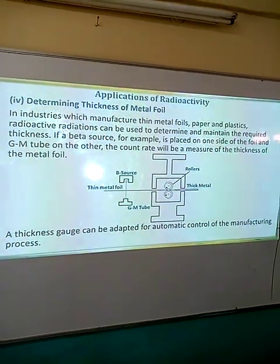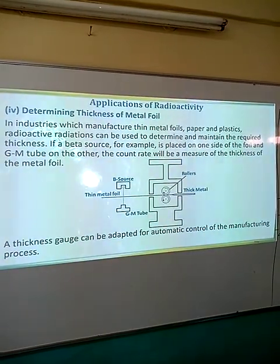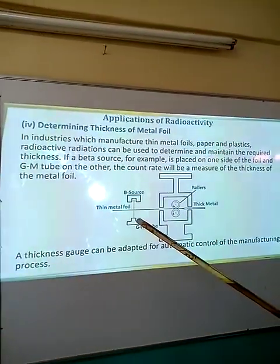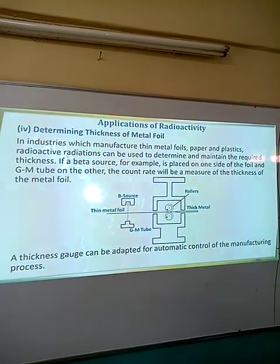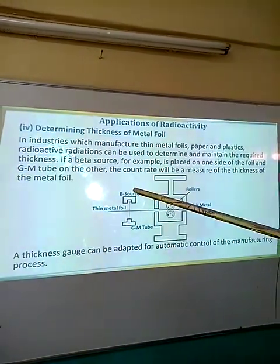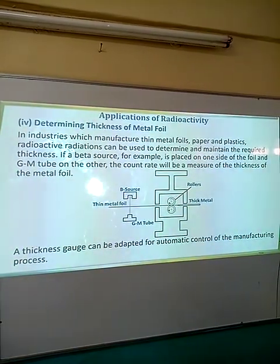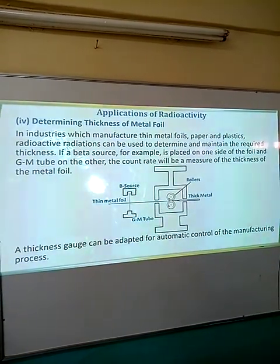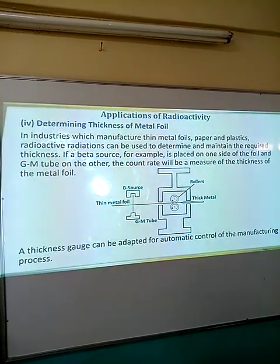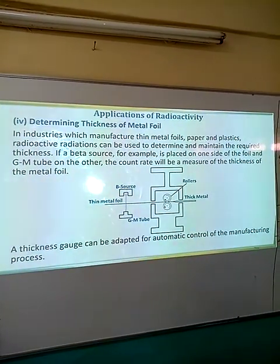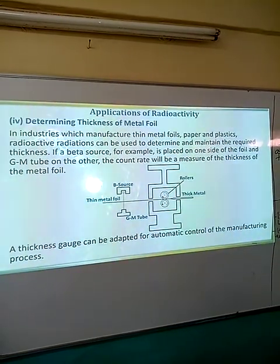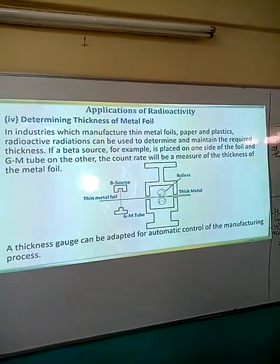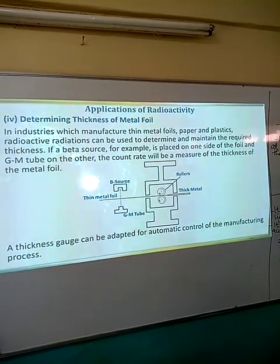Another application is in the detection of the thickness of metal foil. As you can see on the diagram, we have a metal from the manufacturing process. Below the GM tube — one of the radioactive detectors — is placed, and above we have the radioactive source, in this case beta particles or radiation. The count rate as indicated in the GM tube determines the thickness of the metal. The more thicker the metal is, the slower the count rate, and the less thick the metal is, the higher the count rate.